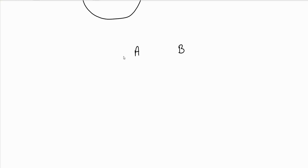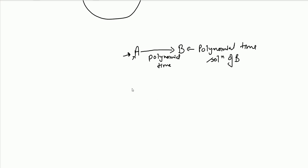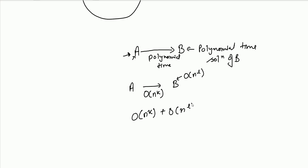Now, suppose I have a problem A and a problem B. I don't know the solution of A, but I know the polynomial time solution of B. And there is a way to reduce A to B in polynomial time. Then I can solve A in polynomial time. If the reduction takes n^k time and B is solvable in n^L time, the solution of A will take order n^k by reducing A to B and then solving B. So A can also be solved in polynomial time.